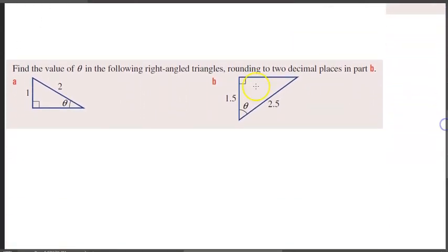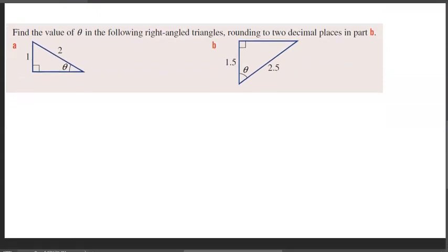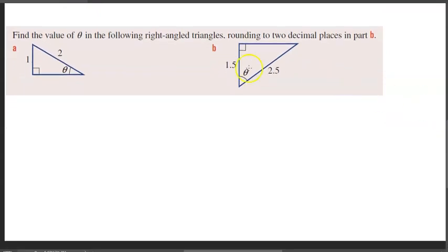In this example here, find the value of theta, remember this means unknown angle, in the following right-angled triangles, rounding to two decimal places in part B. So part A we don't have to round, but part B we do. The first thing we are going to do, as normal, is we're going to label what we do know, we're going to label the sides.